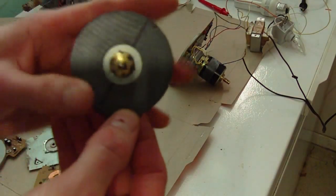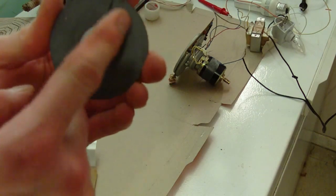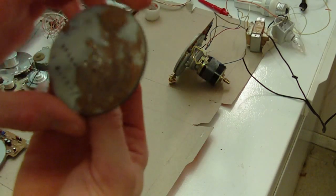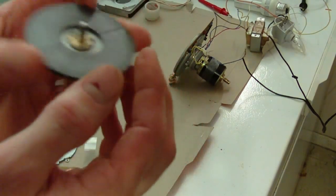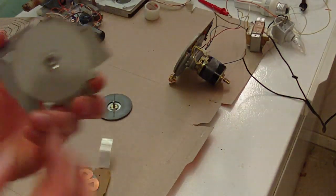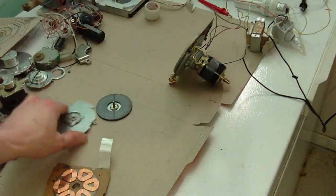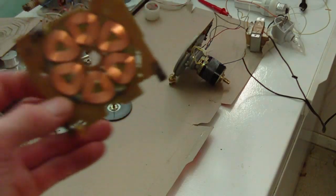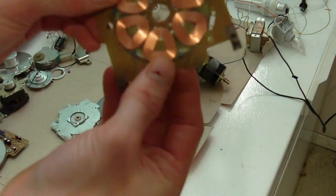Now there's the magnet. It has probably two poles, a north and a south on it. And that's just the cover with the bearing. Now here's the actual windings, the coils.